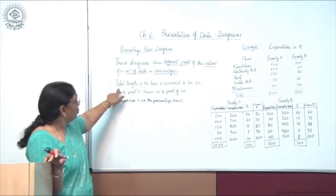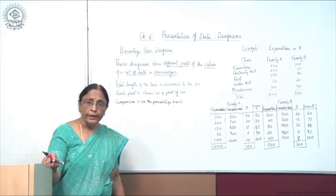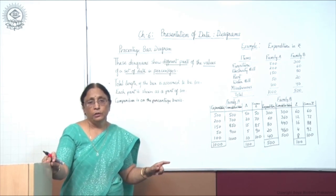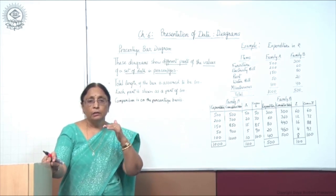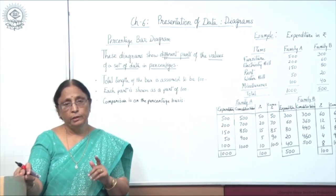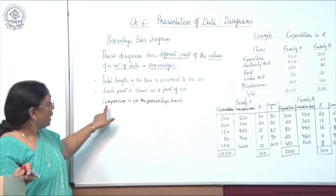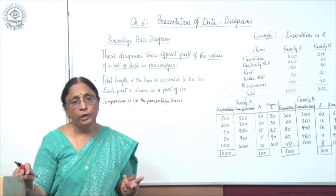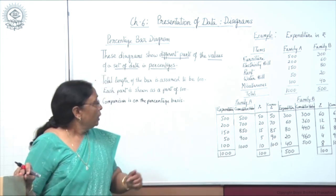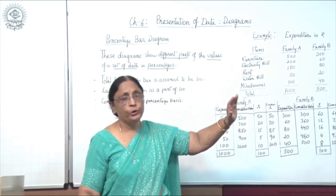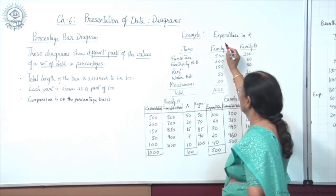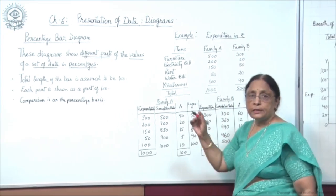Each part is shown as a part of 100. When dividing the bar, each part will be a part of 100 on the percentage basis, and comparison is on percentage basis, not on absolute values. Now let us take an imaginary example: the expenditure of two families, Family A and Family B, expressed in rupees per month.